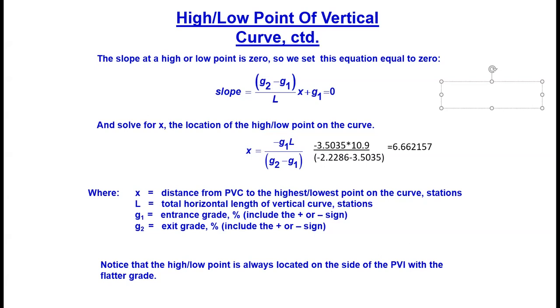We need to start by solving for our PVC station. We were given our PVI station of 31+50. We can subtract 5+45, that's half of the length of the curve. Our curve is 10.9 stations or 1090 feet. Our PVC station is station 26+05.